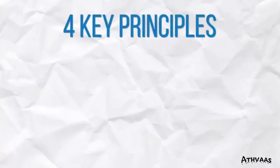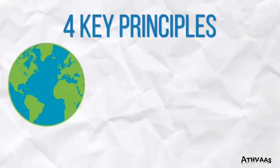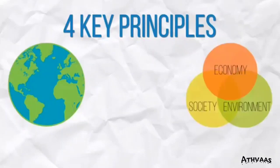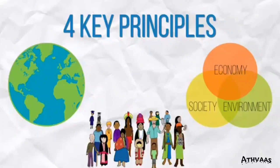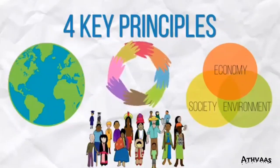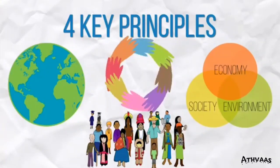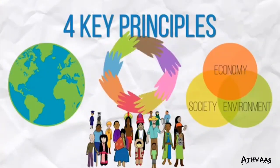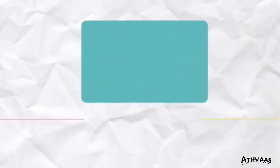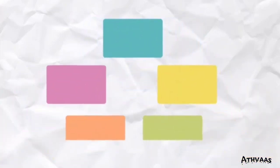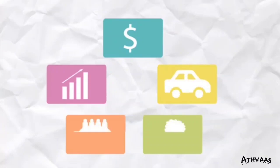The four key principles regarding this are: first, the universe belongs to everyone; second, there needs to be a balance between societal, economic, and environmental factors; third, leave no one behind; and the last one is to ensure equal participation of all. Governments also need to identify which departments they need to involve in the SDG goals.